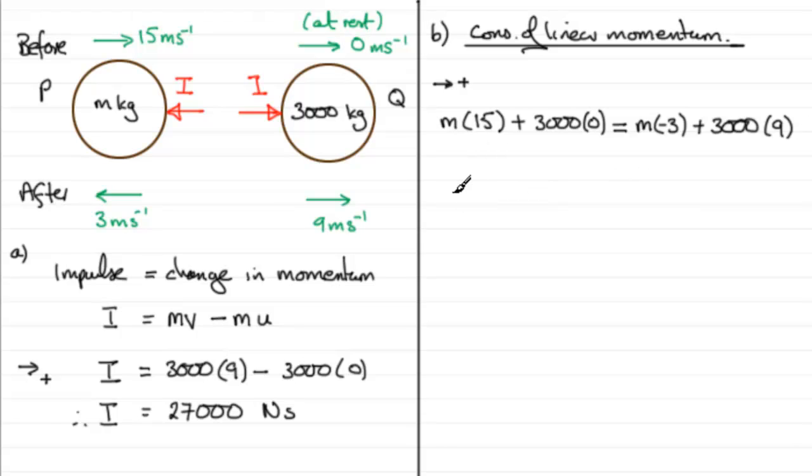So, very easy then. All we've got to do is simplify this side. You've got 15m plus 0, so that's 15m. And here you've got minus 3m. And if you do 3000 times 9, that is 27,000. So adding 3m to both sides gives us 18m equals 27,000.